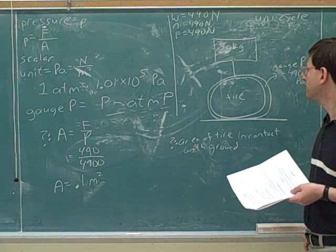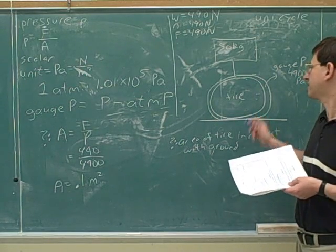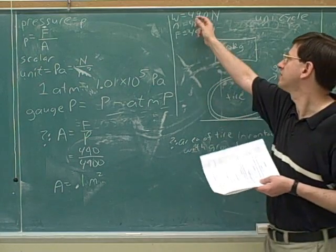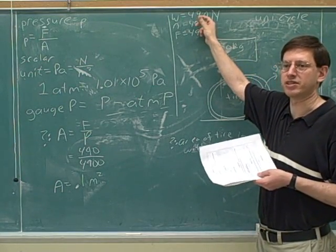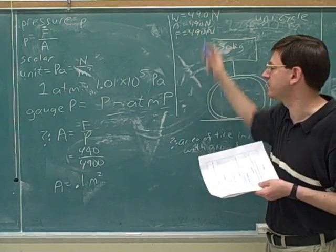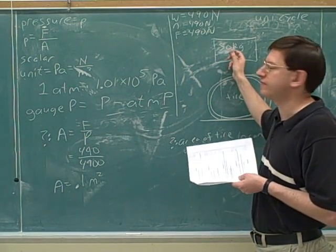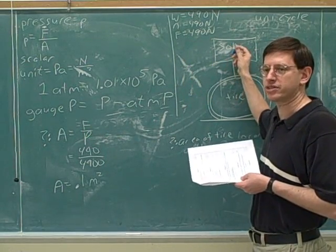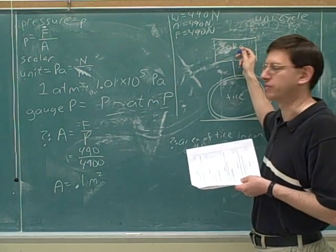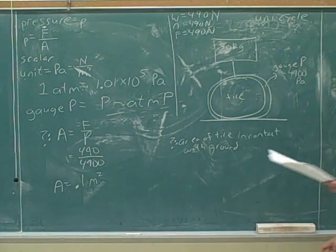Well the difficult thing was we weren't quite given the force. We had to work it out here. The question was asking what was the area of the tire in contact with the ground? It's not so easy. So you have to ask yourself, what's the pressure in the tire doing? The pressure in the tire is basically supporting the unicycle. So you have to ask what force does it have to provide to support the unicycle? Well it has to provide a force that's going to balance the weight over here. So the hard part was getting the force to plug in.